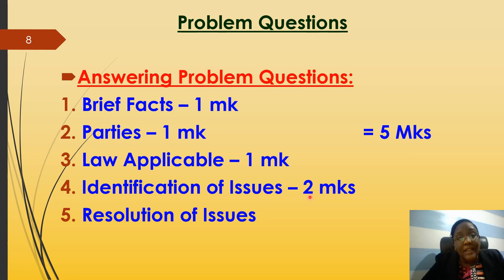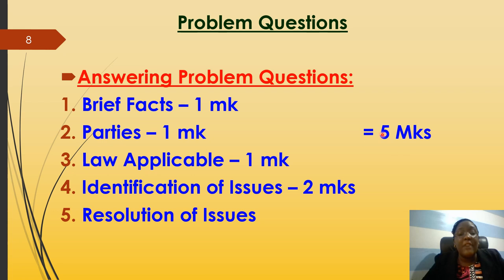Then identify the issues — list all the issues in the question. Each question usually has four to five paragraphs and generally each paragraph contains one issue, so list them: one, two, three, four, five. Listing all issues earns you two marks. So before you even fully start answering the question, you have already earned five marks just for identifying the summarized facts, the parties, the applicable law, and the issues.